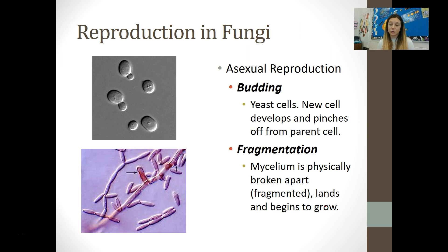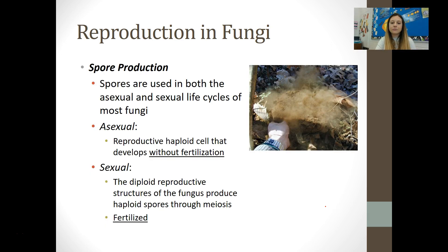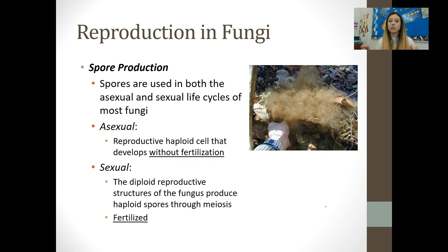Fungi can reproduce both asexually and sexually. Asexually, single-celled fungi like yeast can do budding, where a new cell pinches off and develops from the original parent cell — the offspring are genetically identical. In multicellular fungi, the mycelium can fragment and that piece can grow into a new fungus. Fungi also reproduce using spores both asexually and sexually. In asexual reproduction, a spore grows without fertilization. In sexual reproduction, the spore goes through meiosis and must be fertilized to grow into a new fungus, which is where genetic variation in fungi appears.